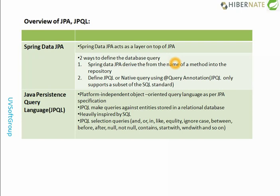The name-method based query means entity-name based queries in the repository. For example, if you have a first name and last name entity, you define findByFirstName and findByLastName in the repository, call it in the implementation class, and implement those things. You can also define the Java Persistence Query Language (JPQL) or use a native SQL query with the query annotation, but the query annotation only supports a subset of SQL.